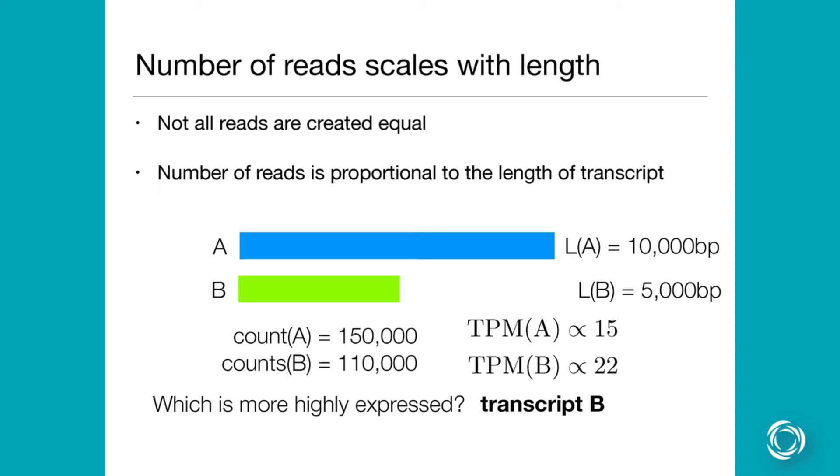you can basically take a look at the number of fragments that you counted along each one of those transcripts. And you can ask which one of them is more highly expressed. So we actually got more counts in the situation from transcript A than B. And just due to the fact that there's a length bias, because you expect to have some long fragment,